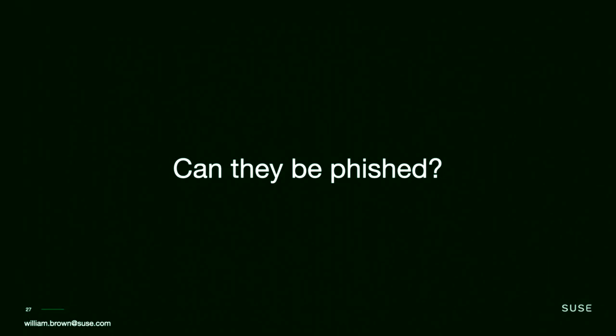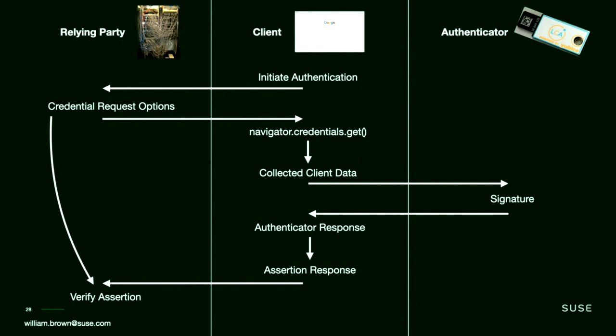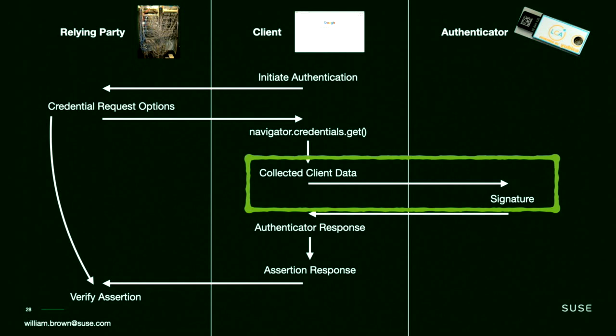The next question is: can they be phished? Phishing is one of those attacks that's very endemic and has been the cause of many high-profile breaches. Things like passwords and TOTP can still be phished in real-time and replayed immediately to the target website. To understand phishing resistance in WebAuthn, we need to come back to our workflow. The step that matters to prevent phishing is at the stage between the collected client data from the browser and how it is sent into the authenticator.